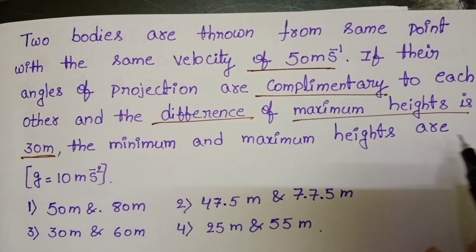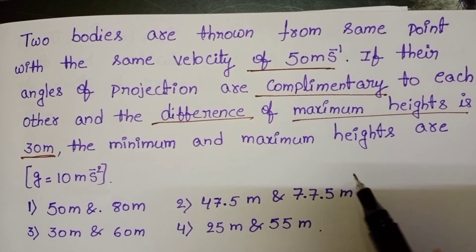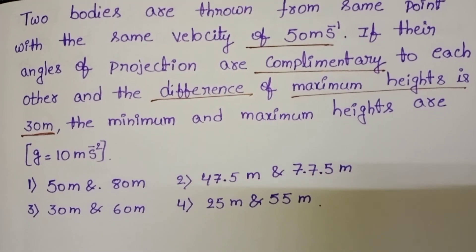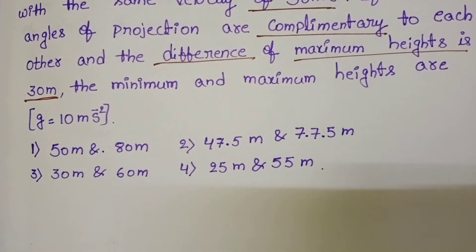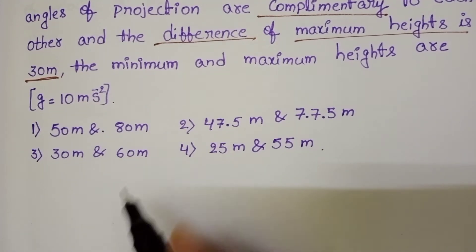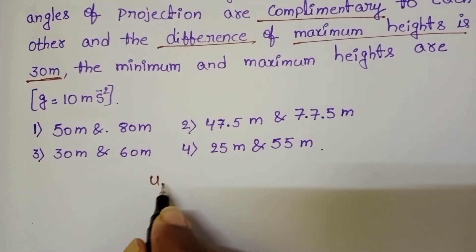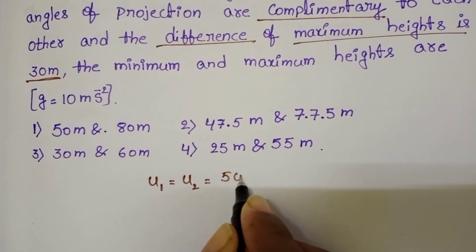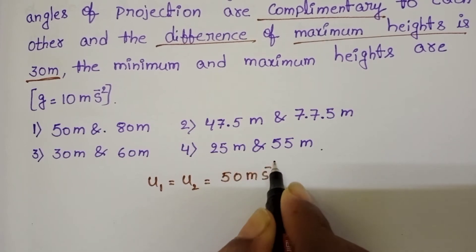In given question two bodies are projected from the same point and the velocity of the two projectiles is also same. Given velocity of first body and second body are equal, that is 50 meters per second.